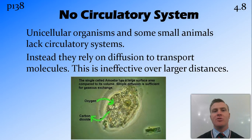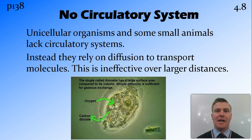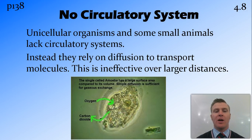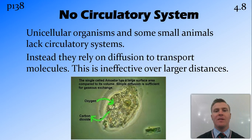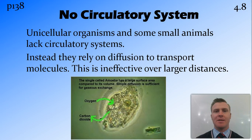Unicellular organisms do not need a circulatory system. Because of their high surface area to volume ratio, the nutrients they require and the wastes they need to expel can diffuse across the cell membrane. However, over large distances — as organisms get bigger — this diffusion becomes ineffective and a specific circulatory system is needed.